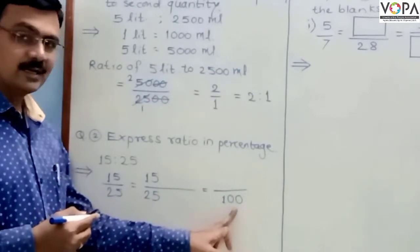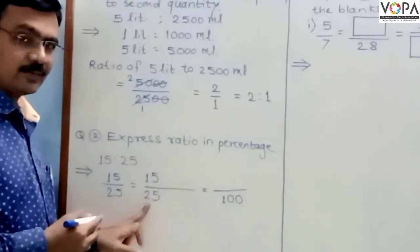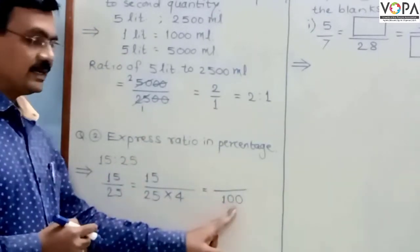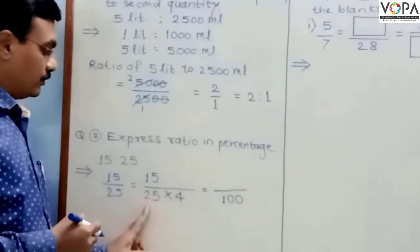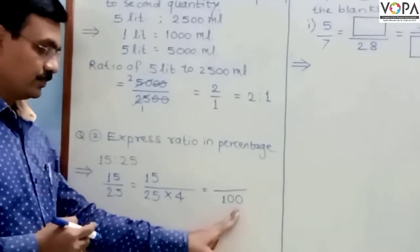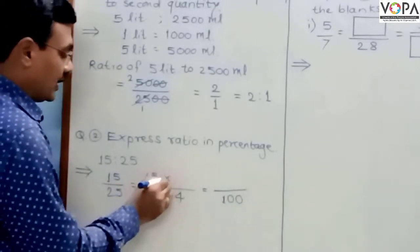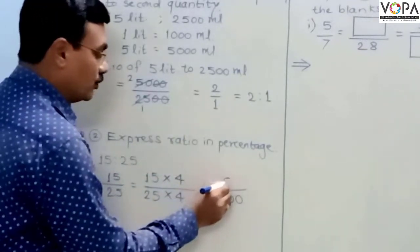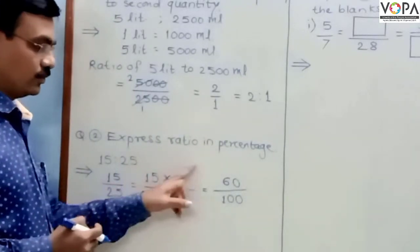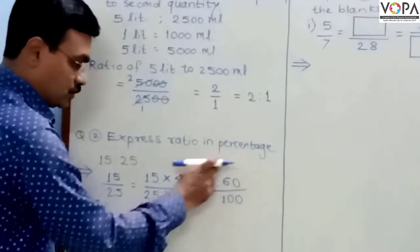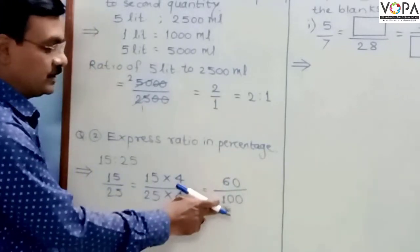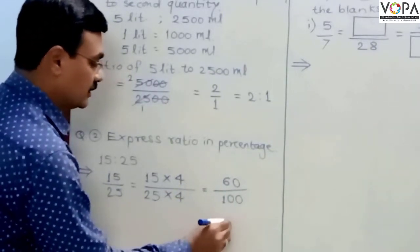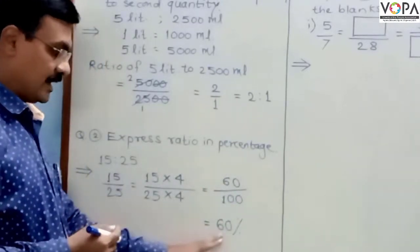We need to decide a number by which to multiply 25 to get 100. If 25 is multiplied by 4, we get 100. So the denominator 25 is multiplied by 4, and the numerator 15 is also multiplied by 4, giving 60. We get the ratio 60 upon 100. This is now a percentage because the denominator is 100, so we write it as 60%.